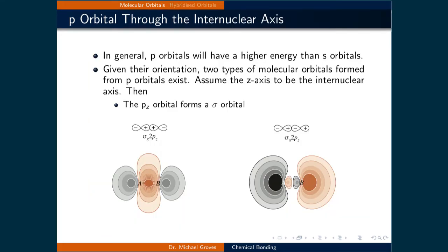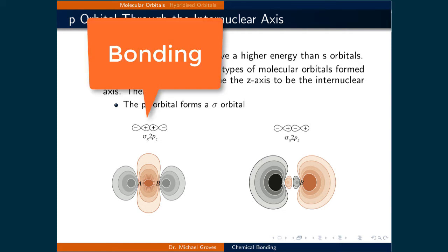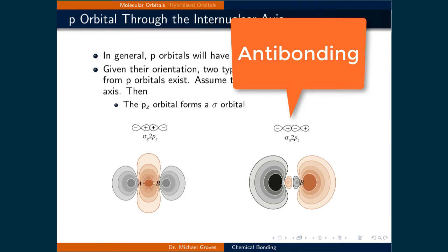In general, p orbitals will have a higher energy than s orbitals. Given the orientation of p orbitals, two types of molecular orbitals formed from p orbitals exist. If we assume the z-axis is the internuclear axis, the pz orbital forms a sigma bond since the wave function solutions directly overlap. If the up part of both p orbitals overlap, they constructively interfere and a bonding orbital results. If the up part overlaps with a down part, the wave function destructively interferes and an antibonding orbital occurs.